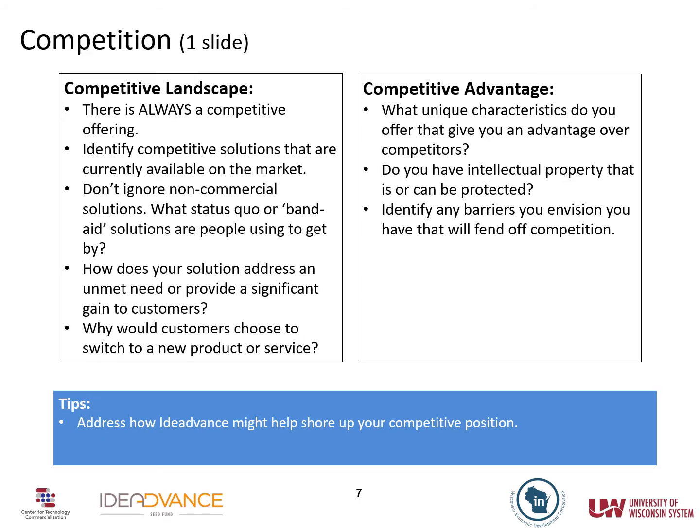Now tell us about the competitive landscape. How are people solving the problem now? If there are competitors already on the market, how is your innovation better? What advantages do you have that will make it difficult for others to compete? It's a red flag when someone says there are no competitors. If there aren't products on the market that you consider directly competing, address indirect competition — what workarounds are people using to get by, and how do you improve upon that?